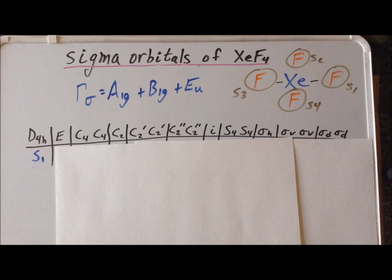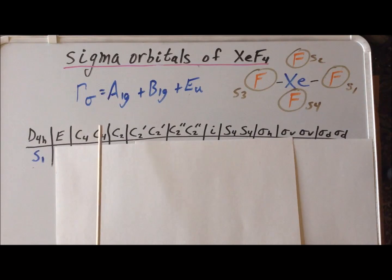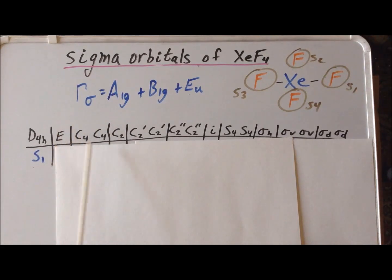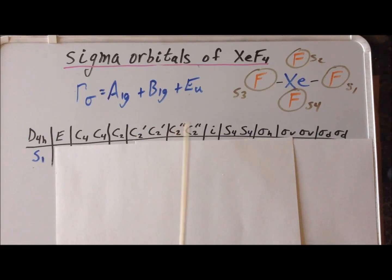However, we would like to be able to visualize what these sigma orbitals on xenon tetrafluoride actually look like. So we need to construct a new table where we need one column for each and every symmetry operation in the group, not just for each class. I've used a vertical line to separate each of the classes, but used a header for each of the individual symmetry operations. For example, we have two C4s in the character table, and we have to put each of the two C4s as their own heading. They belong in the same class, so they're enclosed by vertical lines. There's only one C2, two different C2 primes, two different C2 double primes, and so on.